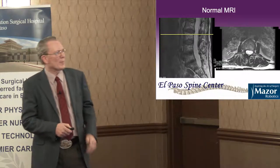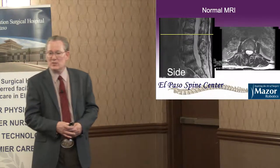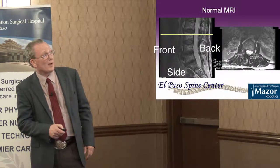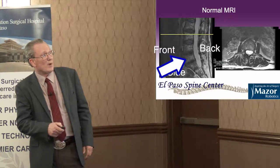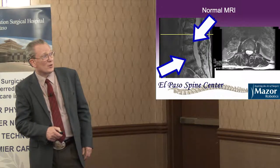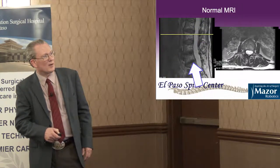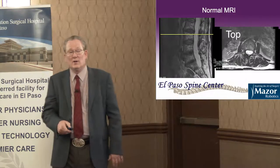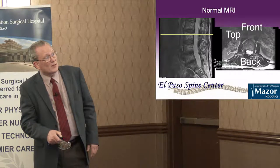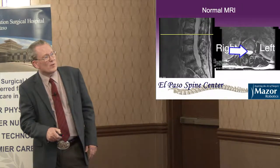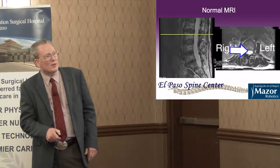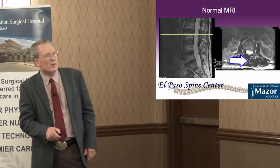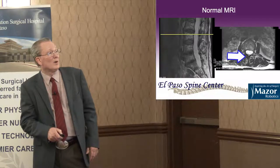This is an MRI of the back — a magnetic picture of the anatomy of the lumbar spine. Looking at the lower back from the side, this is the front, that's the back, these are the bones, and between those are the cushions or discs. Here you can see one that's collapsed. This is an airplane view from the top — these are the nerves and this is the disc. A laminectomy involves taking out the bony Y-shaped lamina, which requires stripping the muscle off the bone.